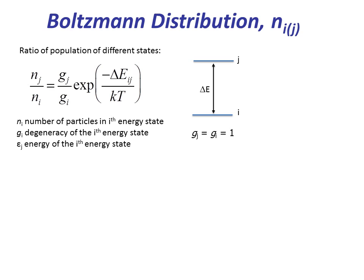The ratio of population of electrons in different states can be expressed by the following equation, where N is the number of particles in a respective energy state, G stands for degeneracy, and E stands for the energy of that particular energy state. In the figure on the right, you can see that both I and J have single degenerate energy states, which would mean that the degeneracy for each of them is one.